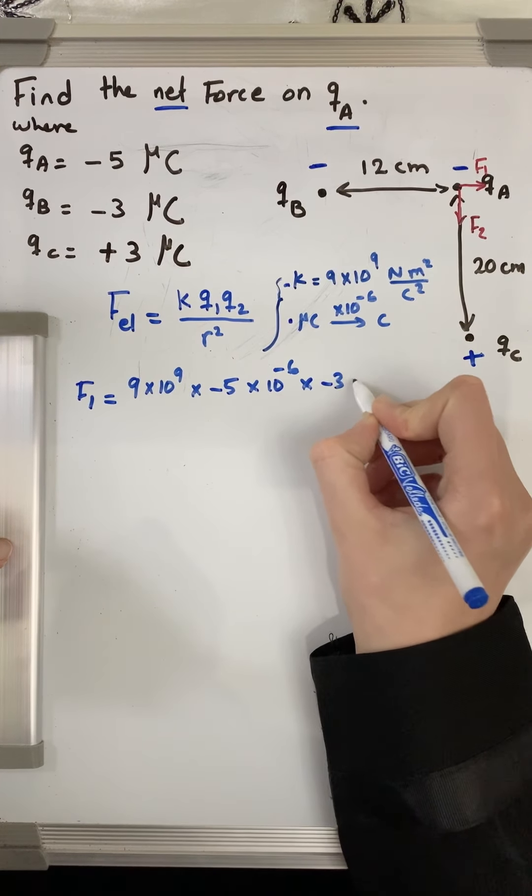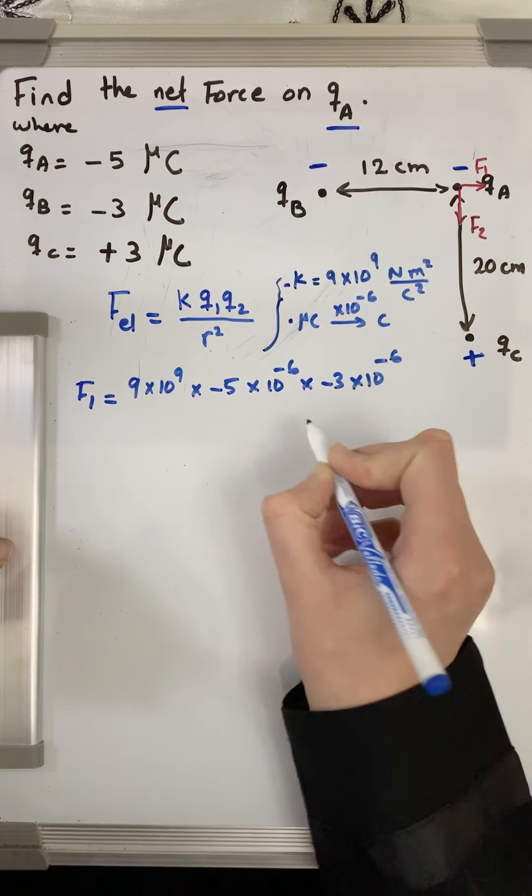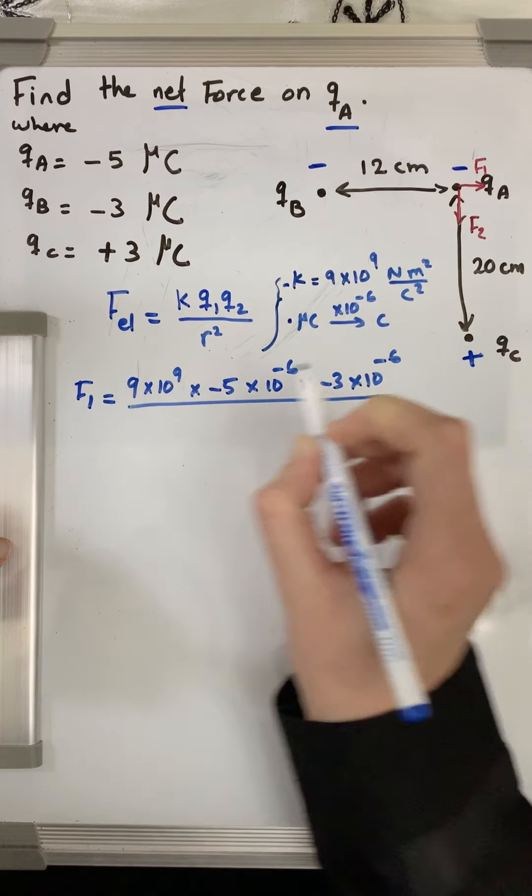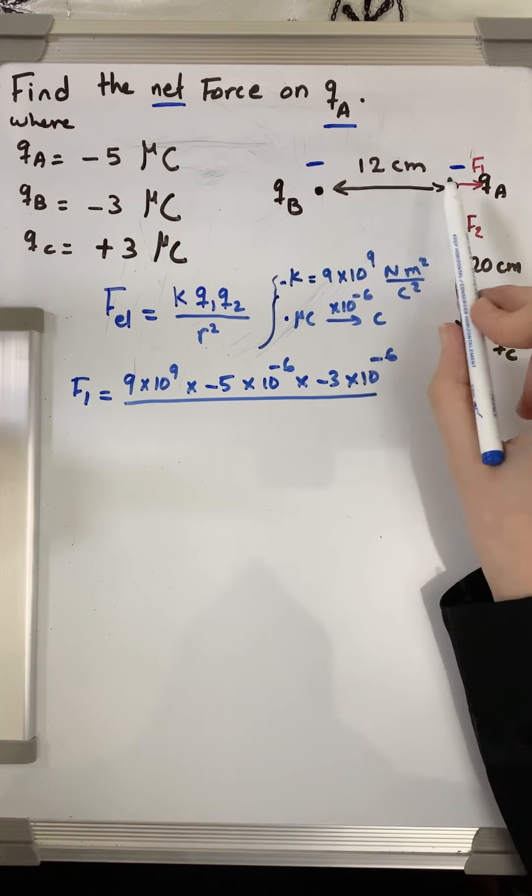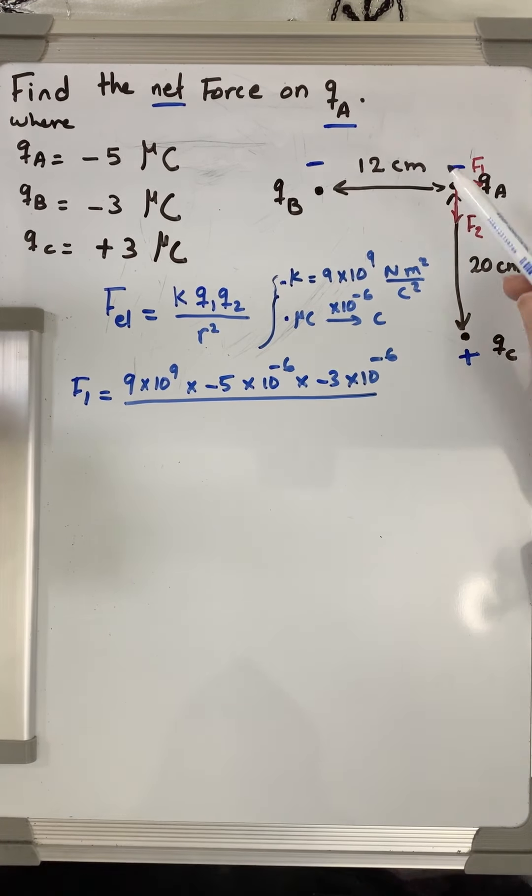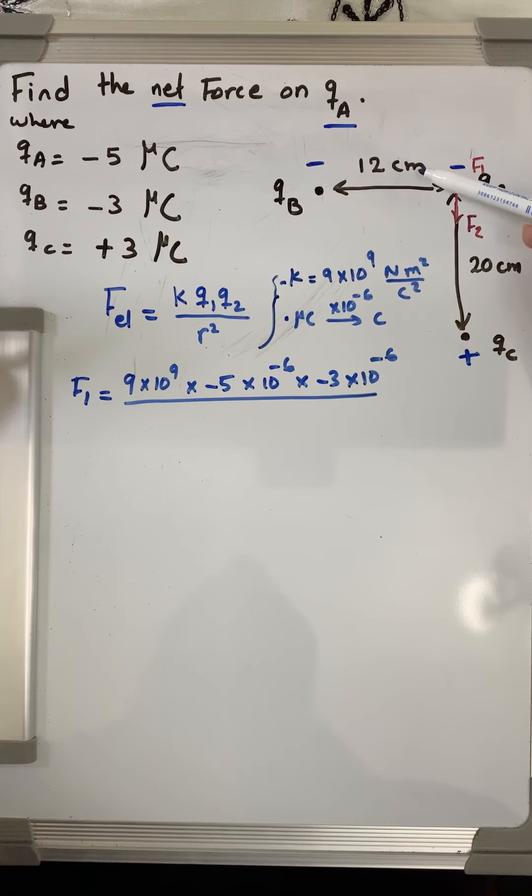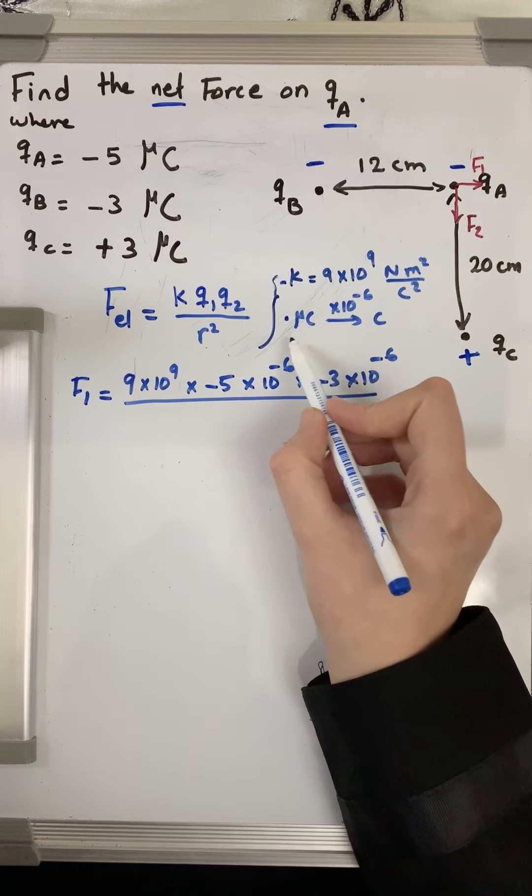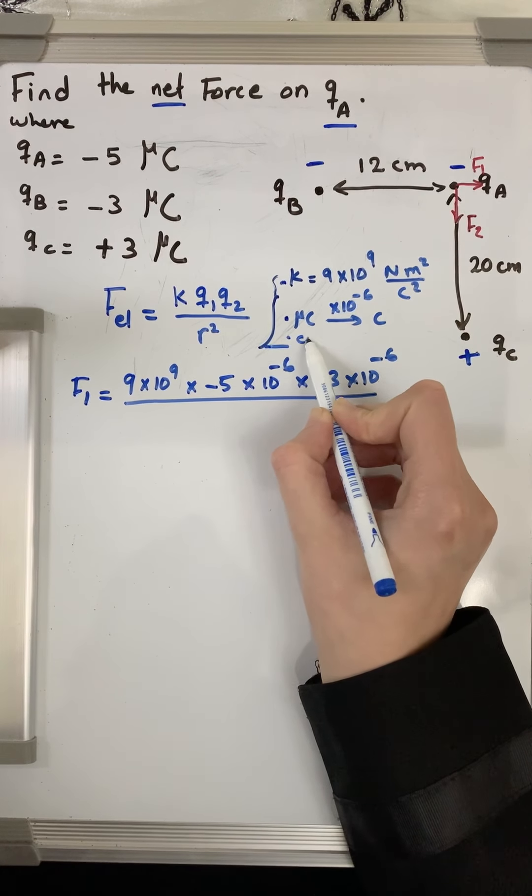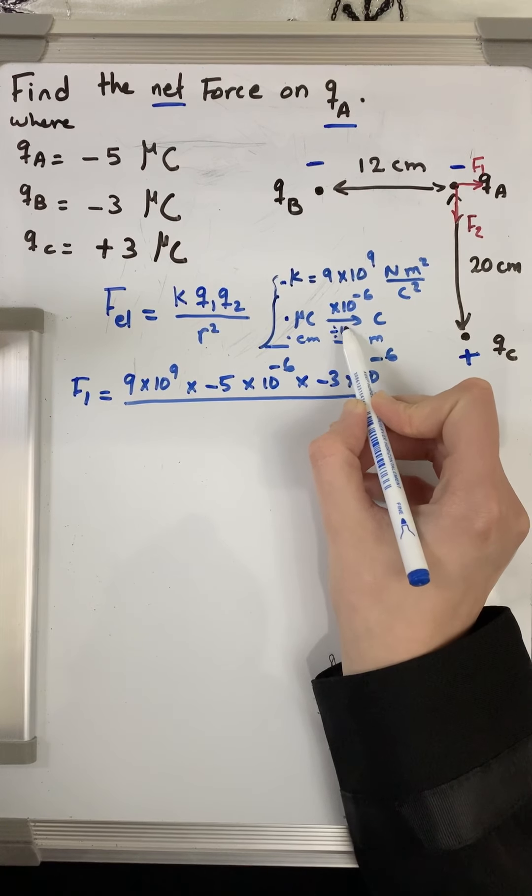qb is negative 3 times 10 to the power of negative 6, divided by the distance between them squared. Now the distance here, as you can see, is not in the SI unit. It's given in centimeters. To convert it from centimeter to meter, I divide by 100 or I multiply by 10 to the power of negative 2.